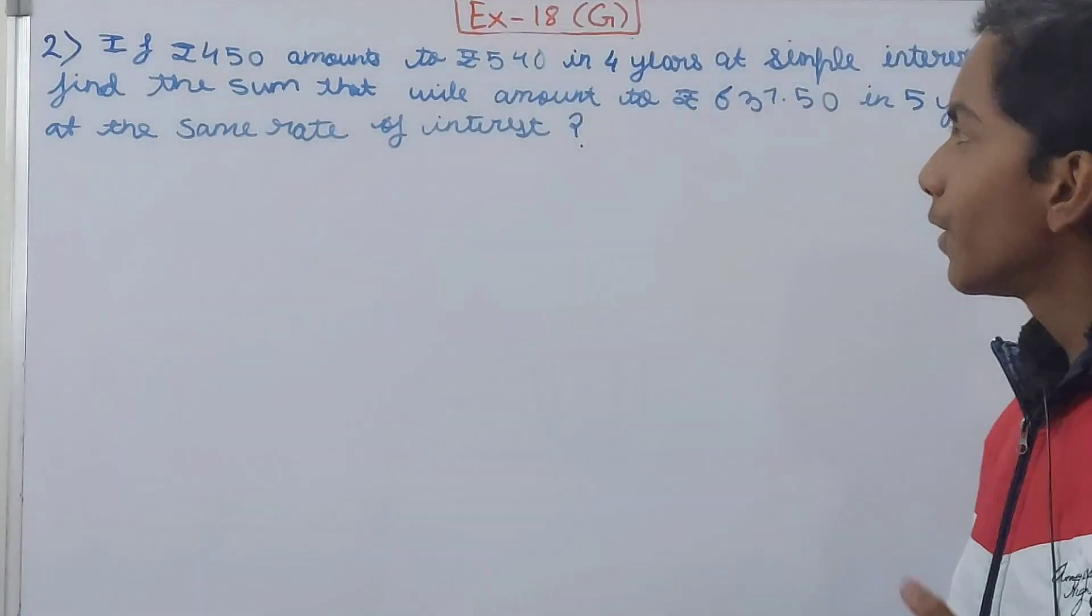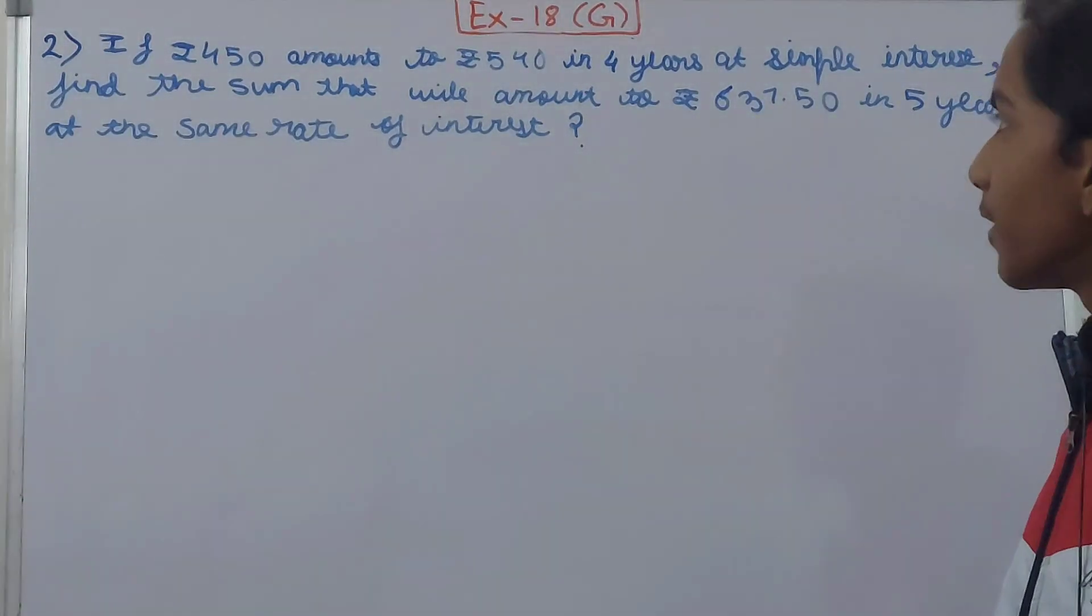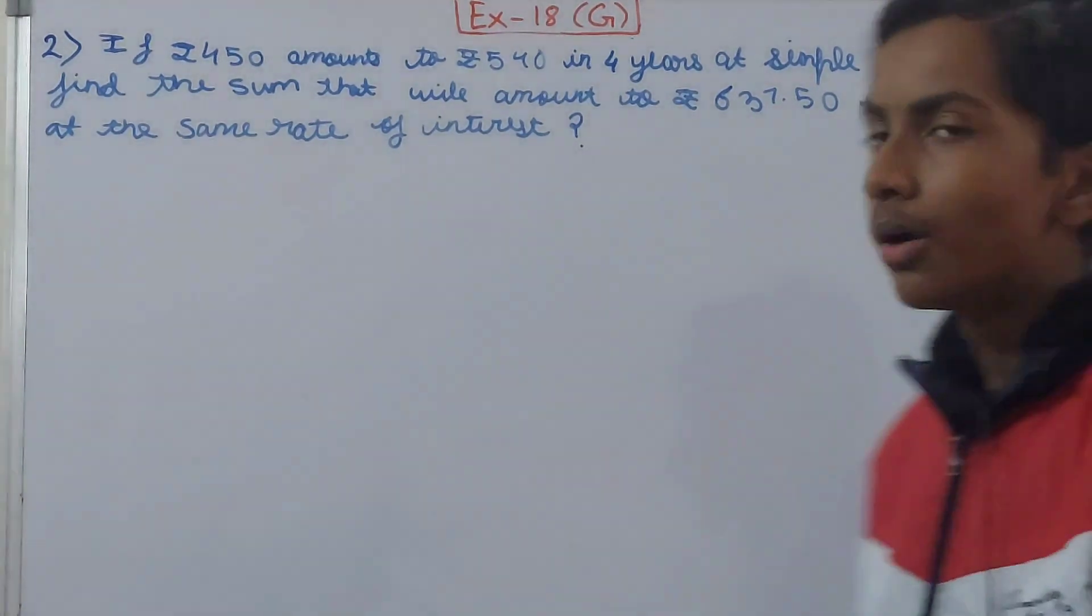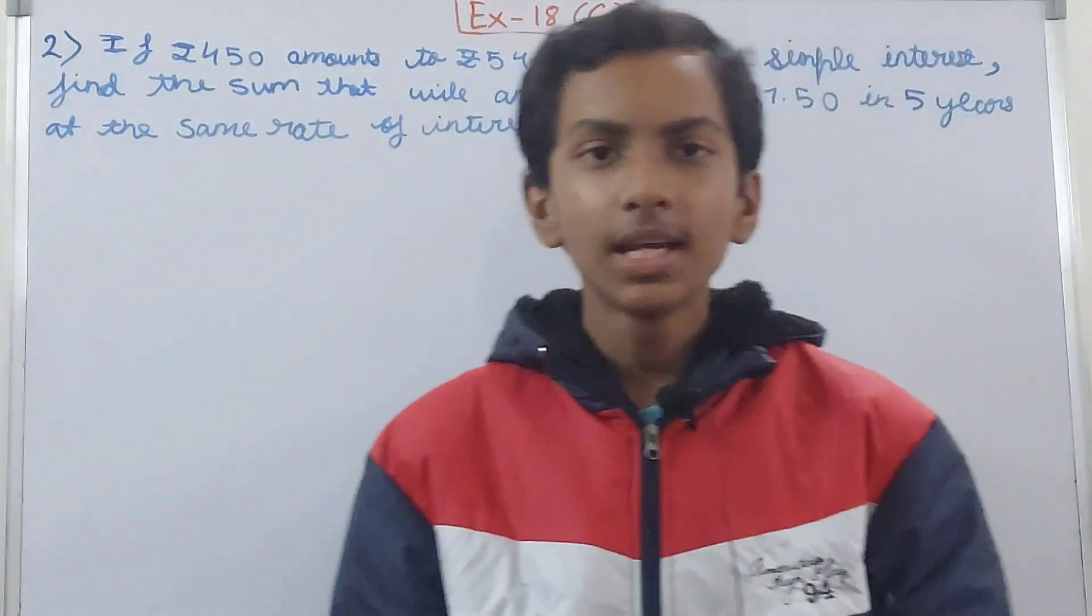If ₹450 amounts to ₹540 in 4 years at simple interest, find the sum that will amount to ₹637.50 in 5 years at the same rate of interest. Now what do we have to see here is that two things are given in the very first beginning line of the question.